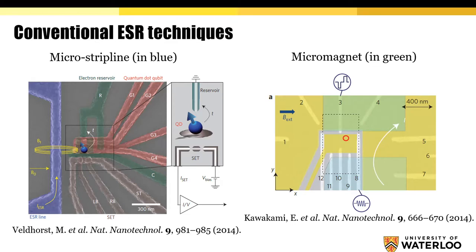Crucially, both methods involve elements that are bulky compared to the scale of an individual quantum dot and are placed on the surface of the chip, taking up valuable space and preventing scalable, dense packing of qubits.